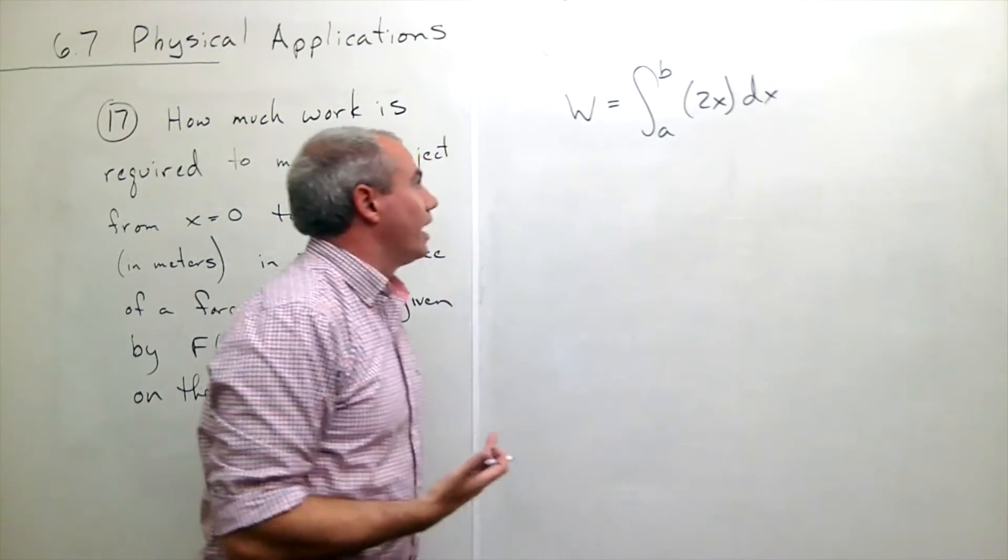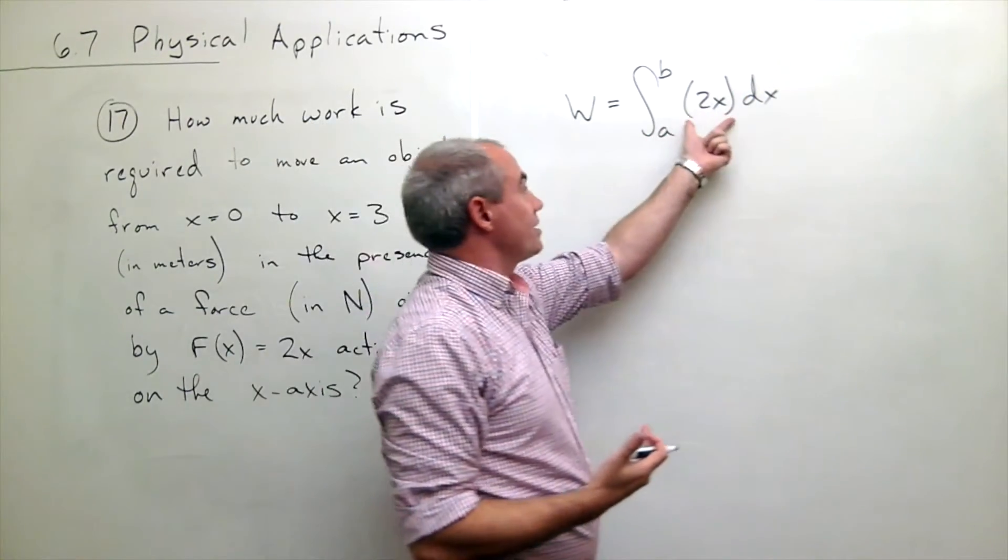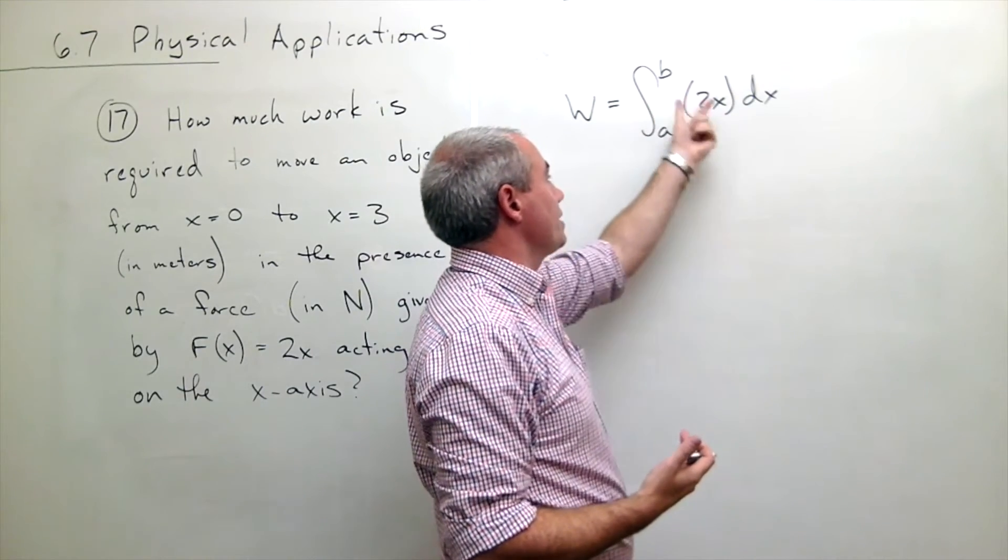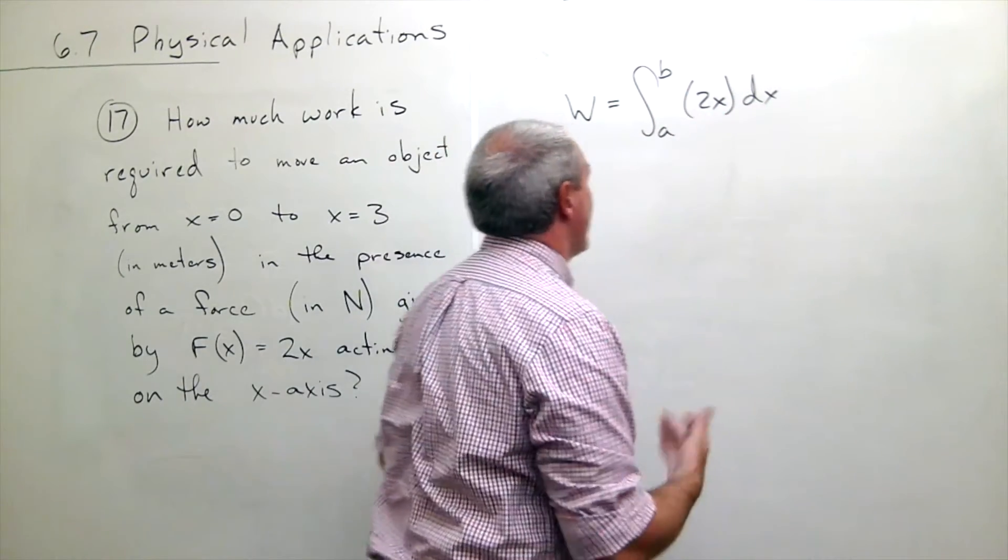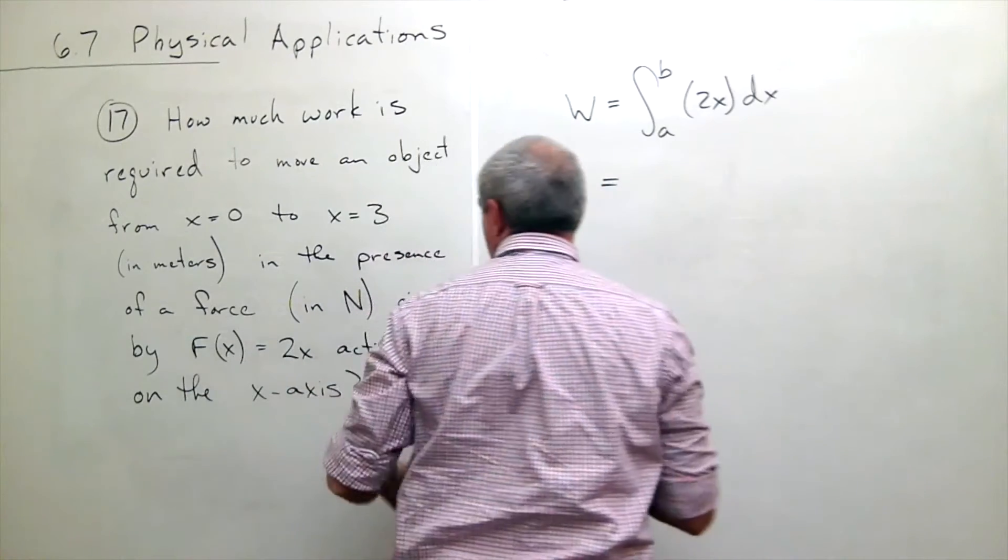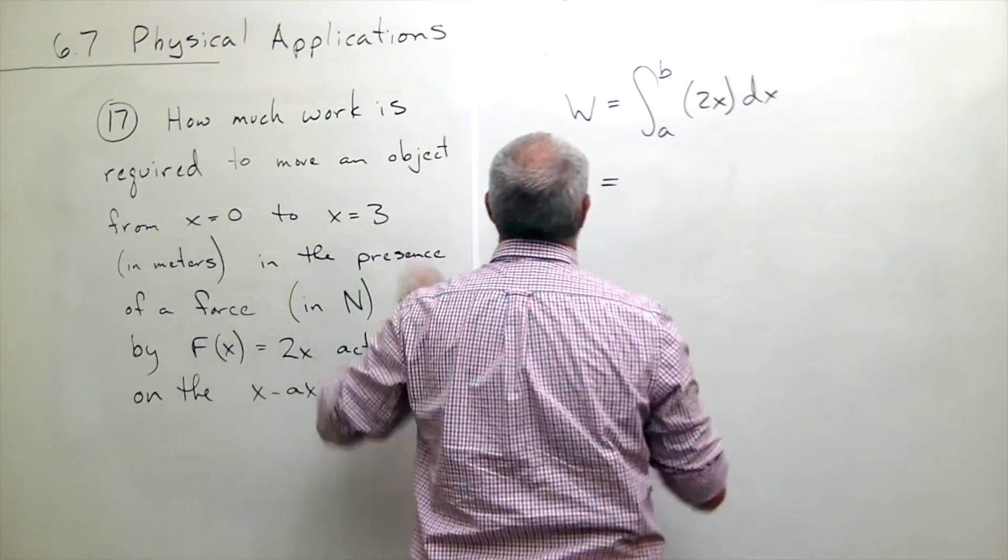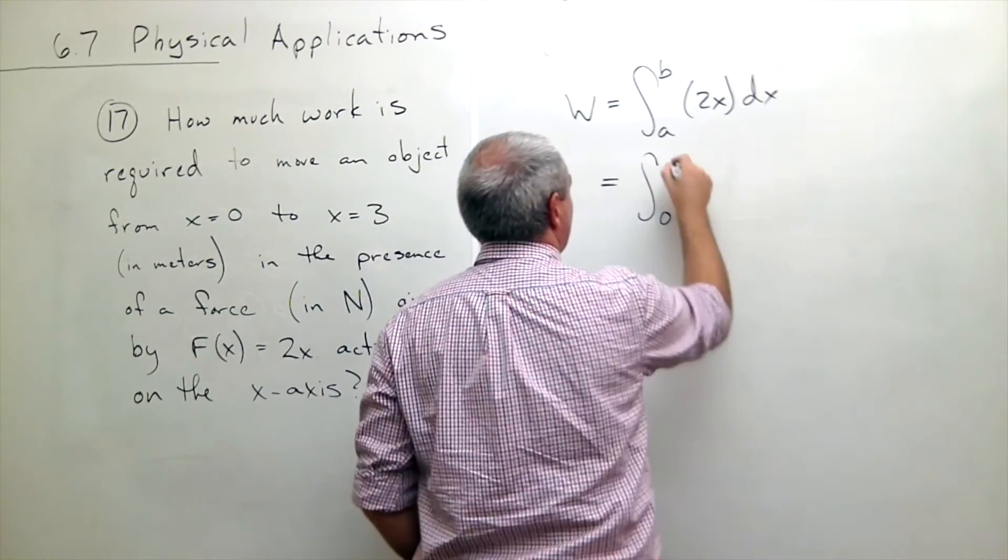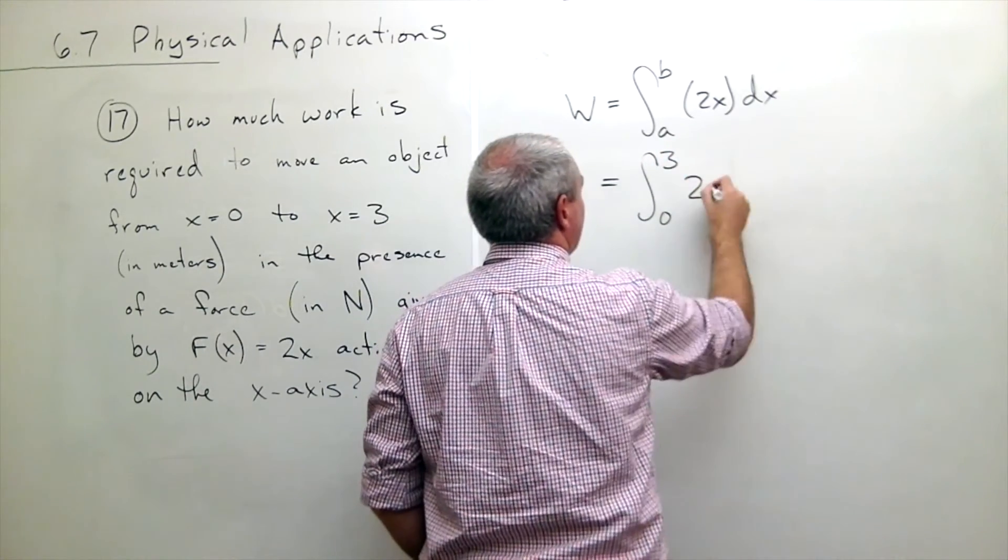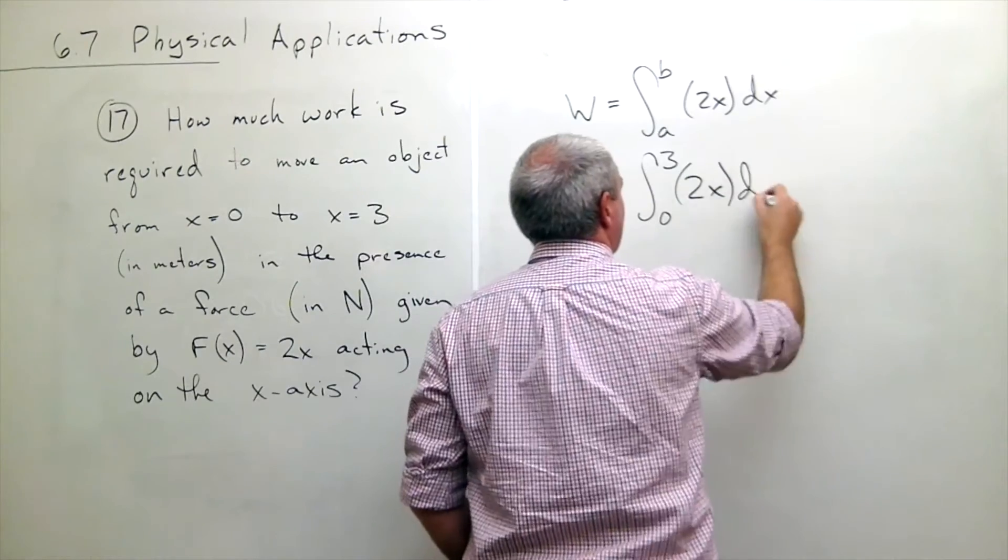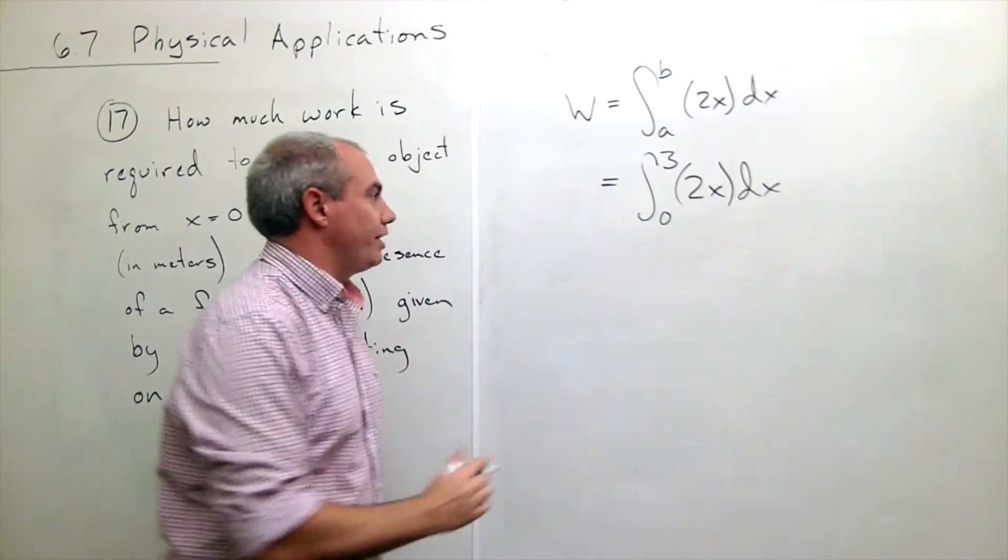dx. So this is the force; we integrate over some distance, a force dx. What is our a and what is our b? In this case, we're moving from x equals 0 to x equals 3, so this is integral from 0 to 3 of just 2x dx. Simple integral.